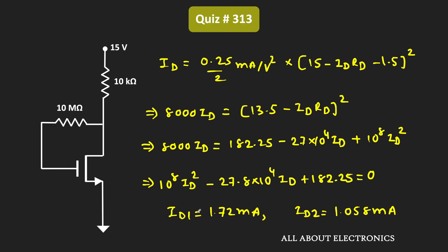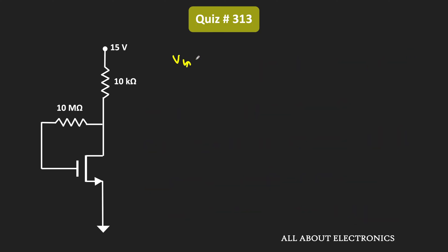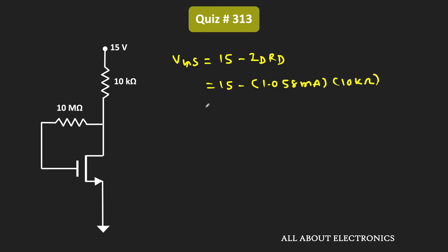With the first value of drain current, if we calculate the value of VGS it comes out as negative, meaning the MOSFET would not operate in the saturation region. Therefore the drain current Id should be equal to 1.058 mA. With that value, VGS equals 15 minus Id times Rd, which is 15 minus 1.058 mA times 10 kΩ, equal to 4.42 V.